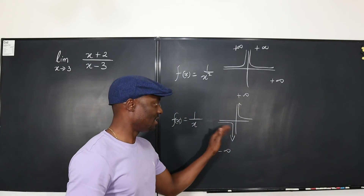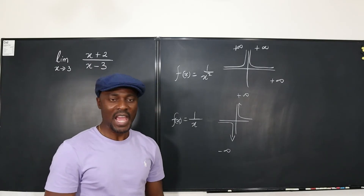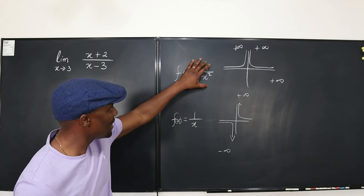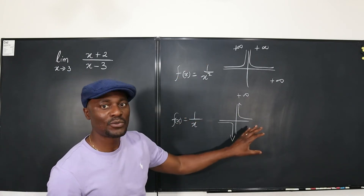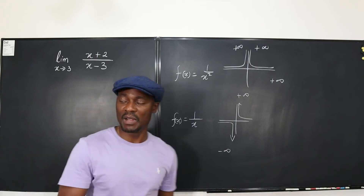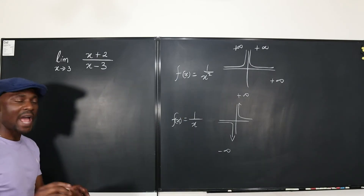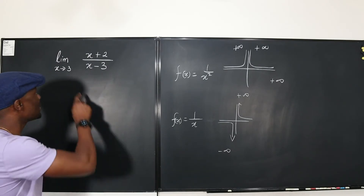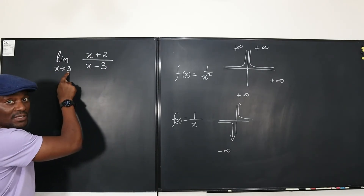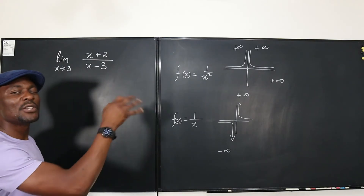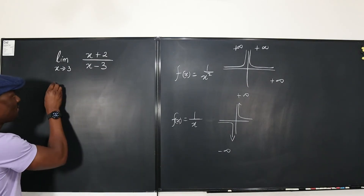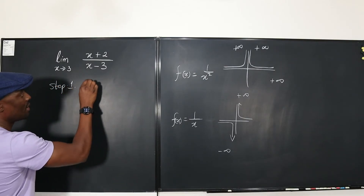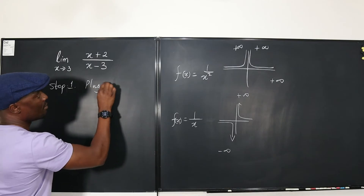The limit for 1/x does not exist, because from the left it is different from the right. And if I didn't give you the graph, how would you just look at the expression and know? Let me explain using this. The first thing you do in a limit problem — every limit problem, as long as the point is finite — is try to plug in the number. So step one is: plug in 3.